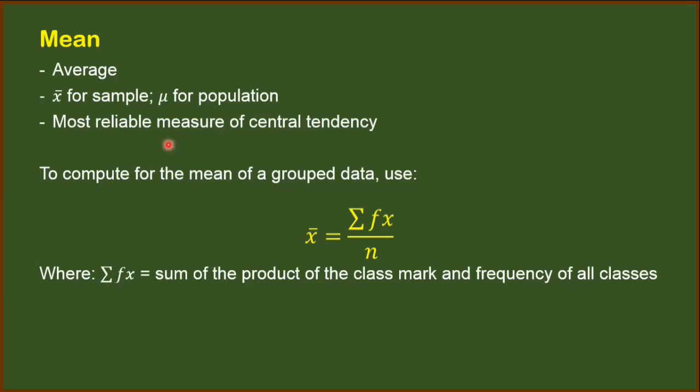Meaning, we will take each of the class mark, multiply it to the frequency, and then get the product. Afterwards, get the sum of all the products. Later, we will do that in our example. And of course, n still stands for the number of data involved.